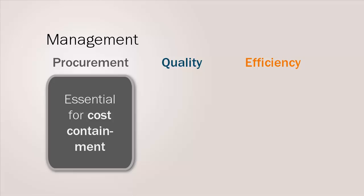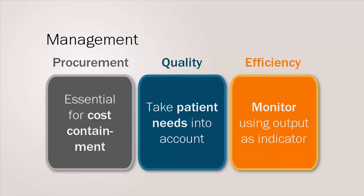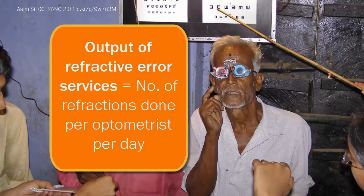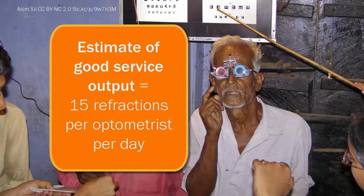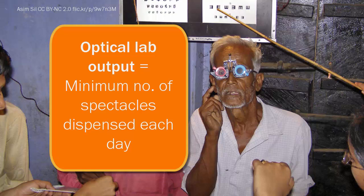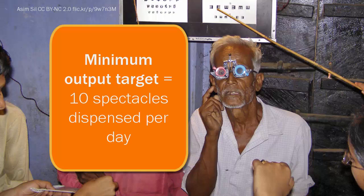Attention to quality means taking patient needs into account and offering a choice of frames. It is particularly important to encourage children and women to accept spectacle correction. Service delivery efficiencies should be monitored using output as an indicator. Output is measured as the number of refractions done per optometrist per day — an estimate of a good service is 15 refractions per optometrist per day. Optical lab output is based on a minimum of 10 spectacles dispensed per day.